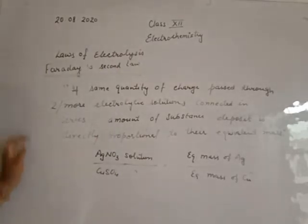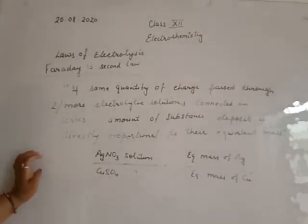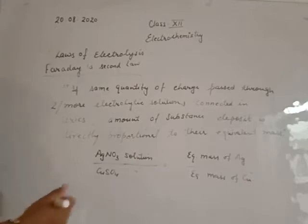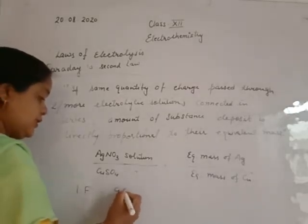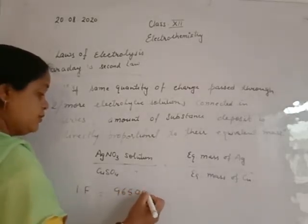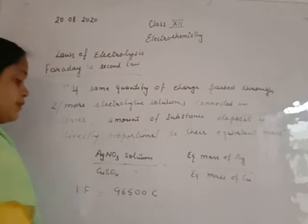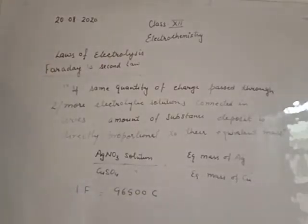From both laws, Faraday gave a constant known as the Faraday constant, represented by 1F. The value of 1F is 96500 coulombs.